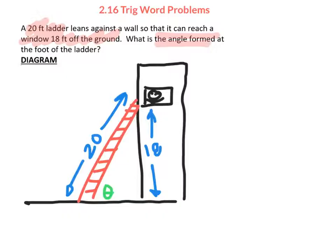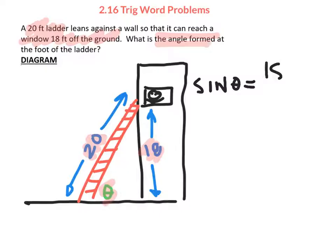It turns into something like this: we have our ladder, which is the hypotenuse. The window we're leaning up against is at 18 feet, and the angle we want is formed at the foot of the ladder. Let's designate what we have — this is an opposite side and this is a hypotenuse — so this is sine. The sine of our unknown angle theta equals 18 over 20.